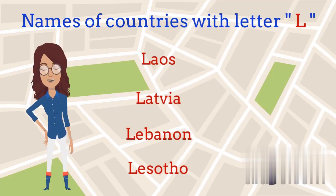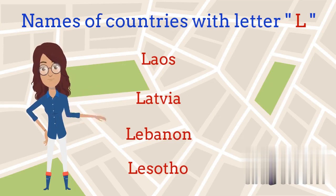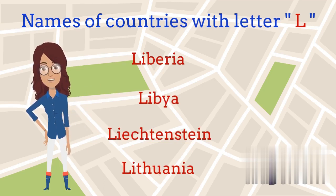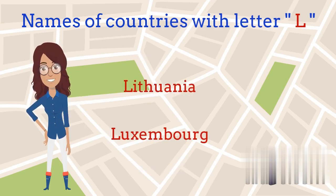Names of countries that start with letter L: Laos, Latvia, Lebanon, Lesotho, Liberia, Libya, Liechtenstein, Lithuania, Luxembourg.